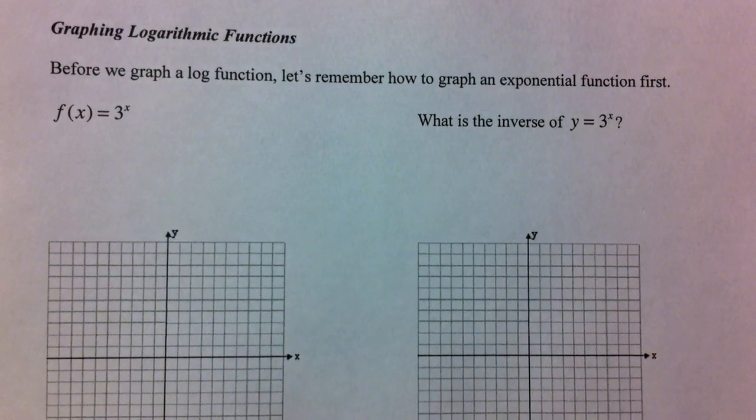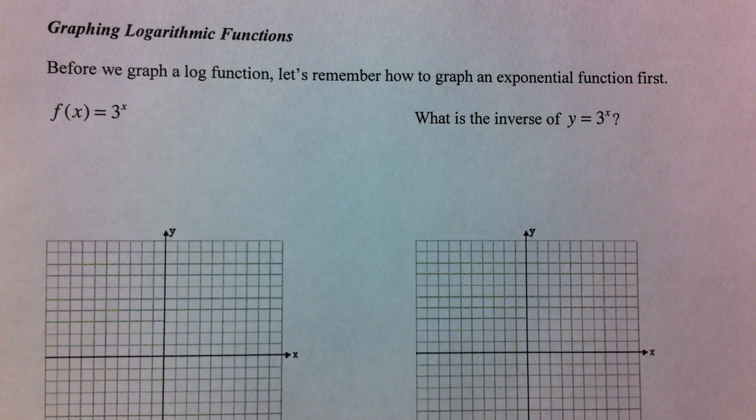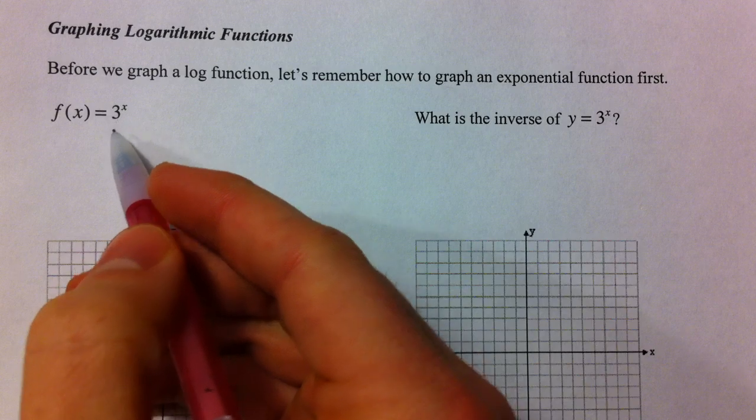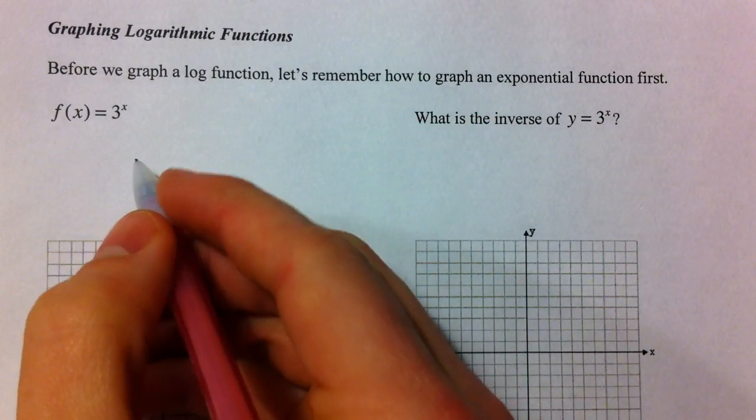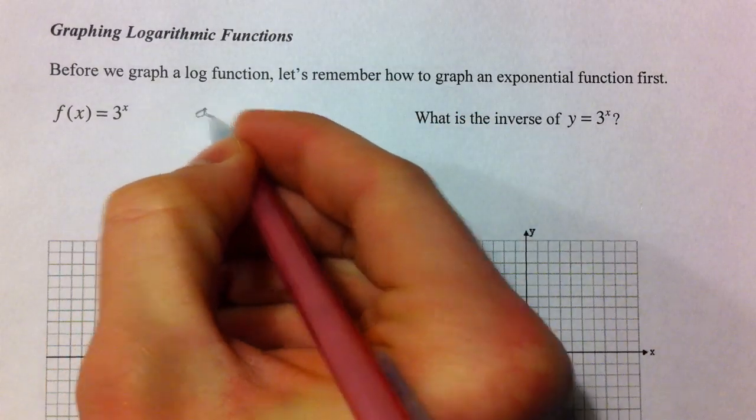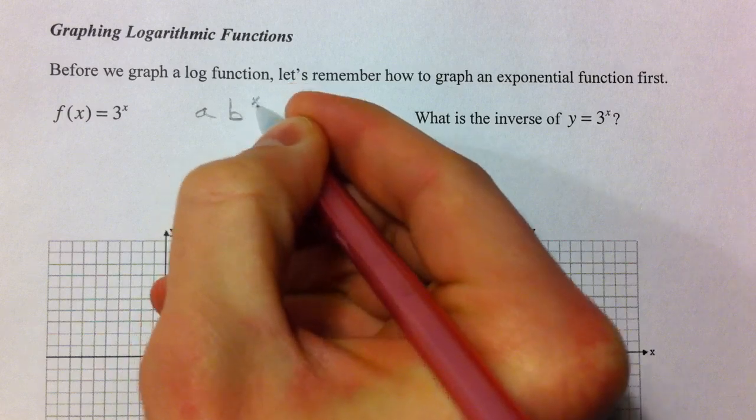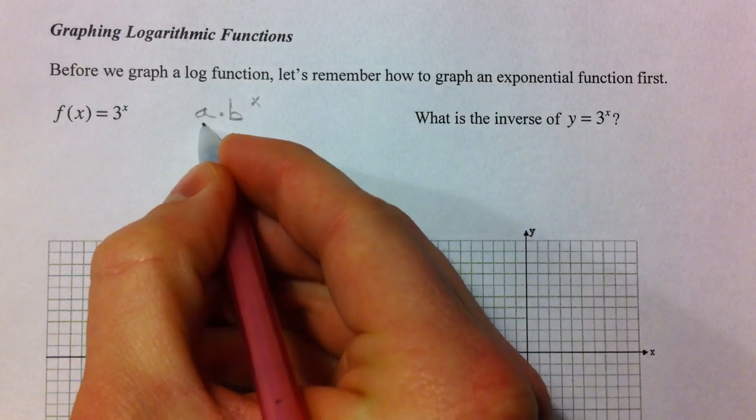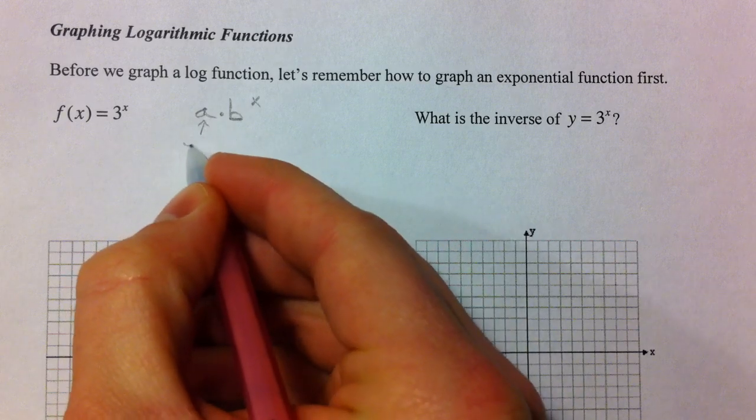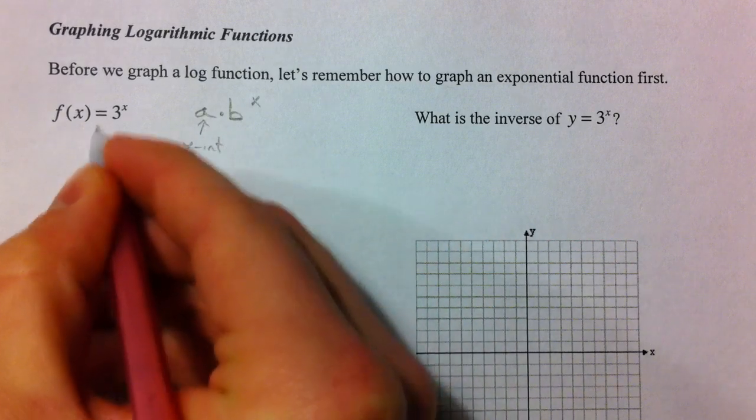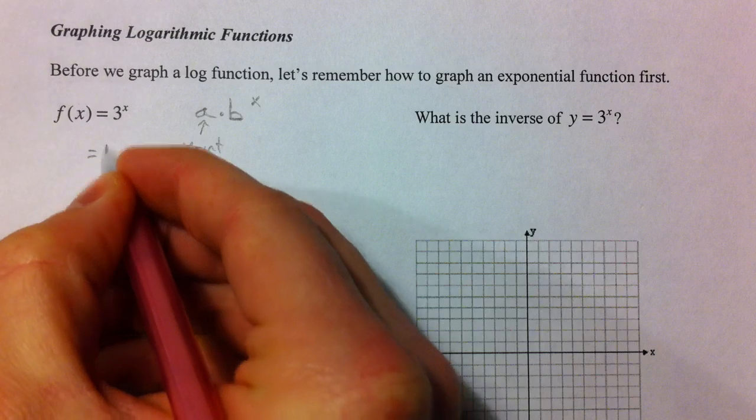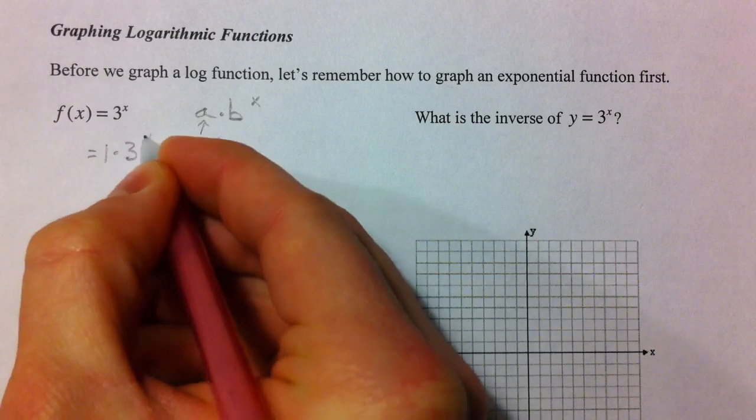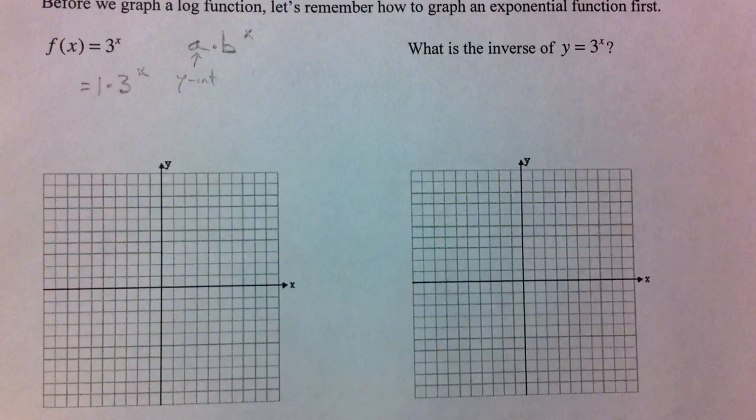So y equals 3 to the x, or f(x) equals 3 to the x. Remember we had some a times b to the x, where a was our starting value, our y-intercept. So we don't have an a, so if you want to write it as 1 times 3 to the x, you can see that our y-intercept is just 1.